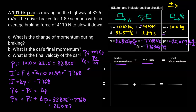The momentum is 25,057 and the mass is 1,010. So VF is going to be 24.8 meters per second.